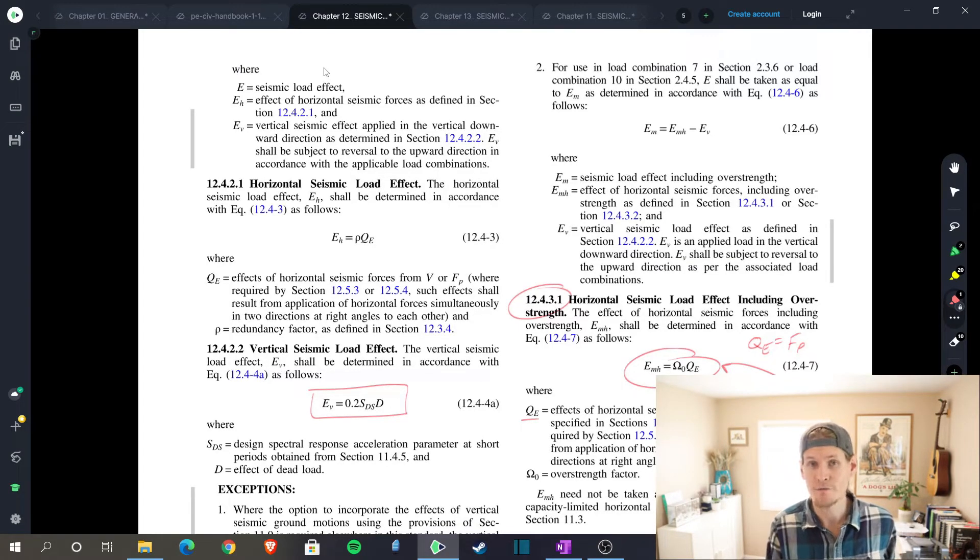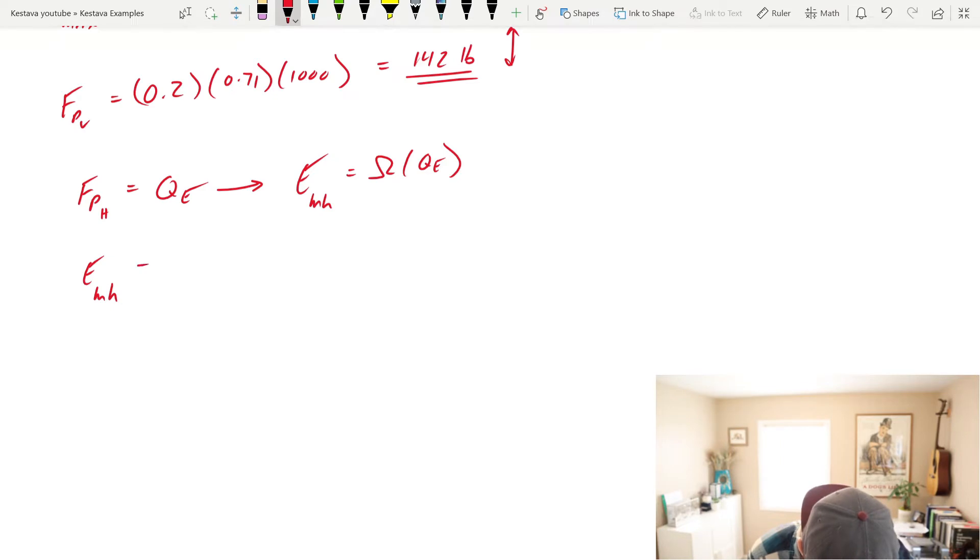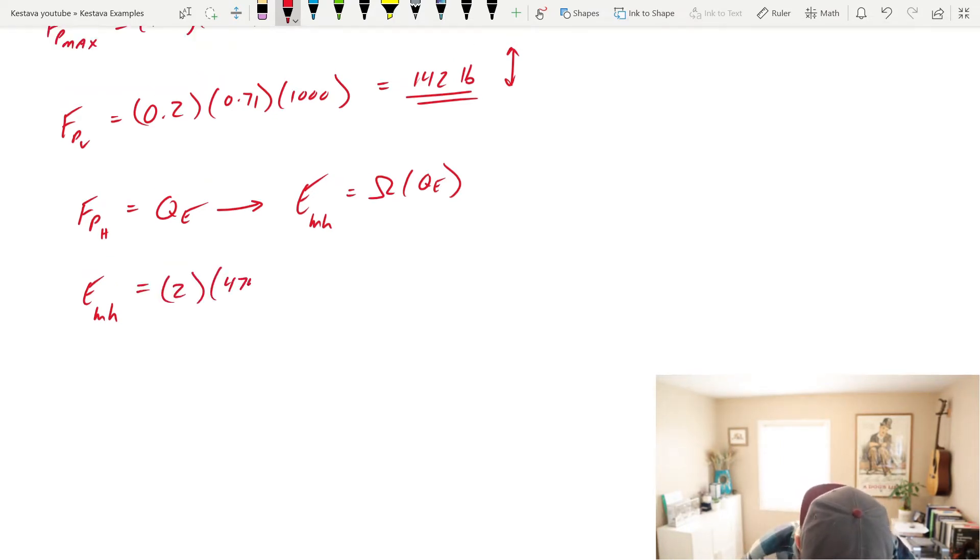EMH is equal to 2 times 474 pounds, which equals 948 pounds of horizontal force that we're designing for. So see how that got bumped up? Pretty significantly. We're going to box that out because that is one of our final forces. EV is just equal to EPV, which we already found is 142 pounds up and down. That we're also going to box.